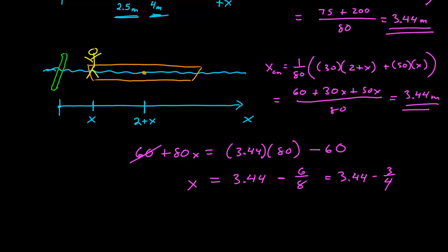And so we're beginning to see the problem. The final x position, say 3.44 minus 0.75, is equal to 2.69 meters.